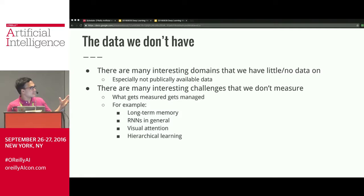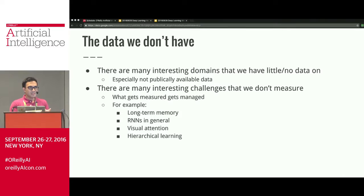There are tasks that could be really valuable except we don't know if they'd work because we have no data. The flip side is there are many interesting challenges we don't measure, and what gets measured gets managed. There are aspects of neural networks we think are good things, but we don't quantitatively verify them — we just make a few visualizations, cherry-pick them for the paper, and say our model is the best thing ever because of a picture.